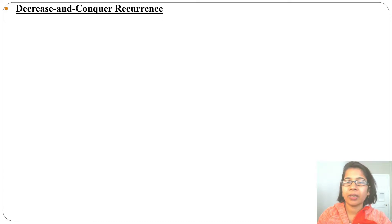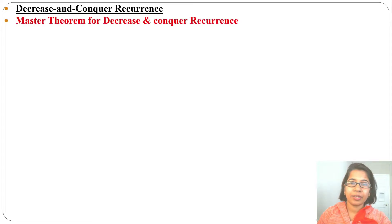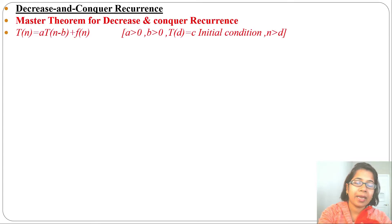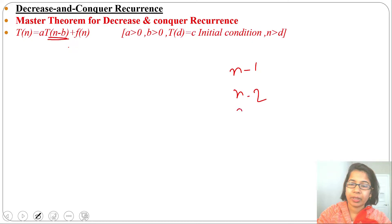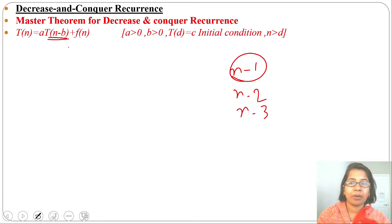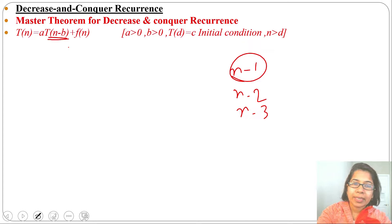Let's discuss decrease and conquer recurrence. I already discussed decrease and conquer recurrence in chapter 1, algorithm analysis. If any recurrence relation is in the form T(n) = a·T(n-b), due to the n-minus-b term it is a decrease and conquer recurrence. It can be n minus 1, n minus 2, or n minus 3 — we are decreasing by a constant. Decrease and conquer is of three types: decrease by constant, variable size decrease, and decrease by constant factor. This recurrence relation is for the first type, decrease by constant.